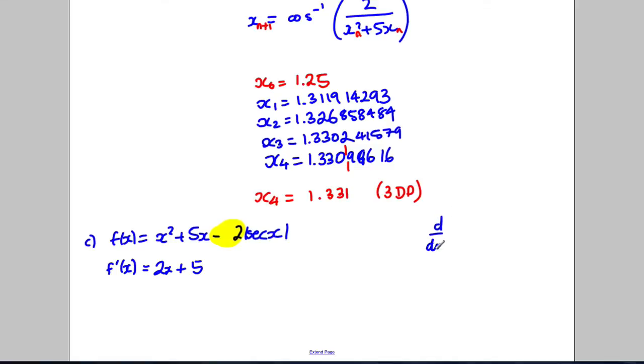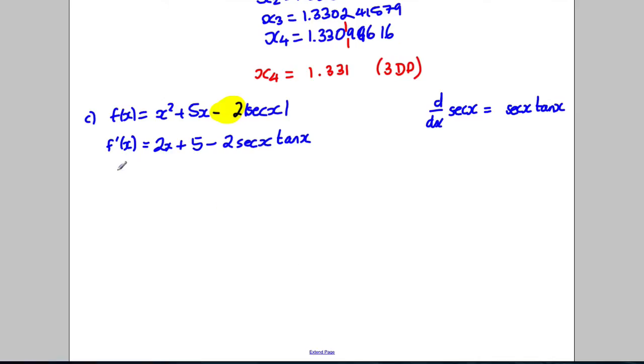Okay. So therefore, this would be negative 2 sec x tan x. Which if we rewrite with the functions we have in our calculator, it would be 2x add 5 subtract 2 tan x divided by cos x like that.